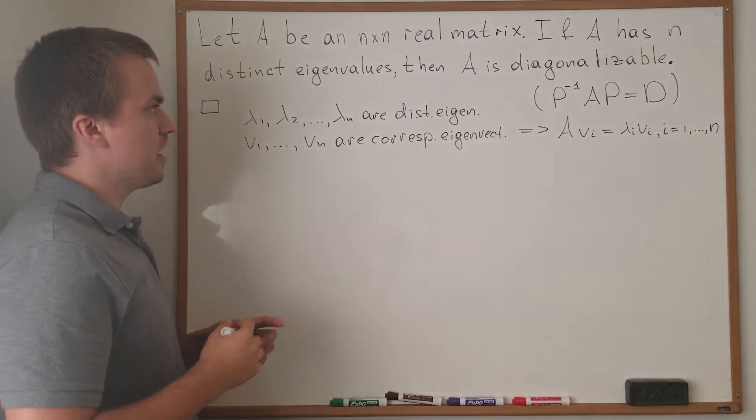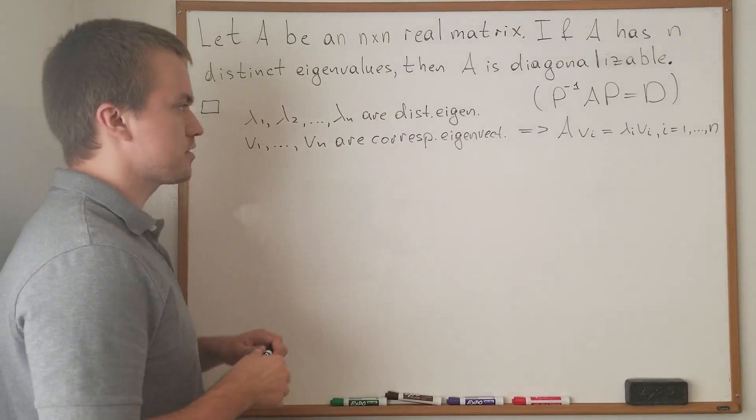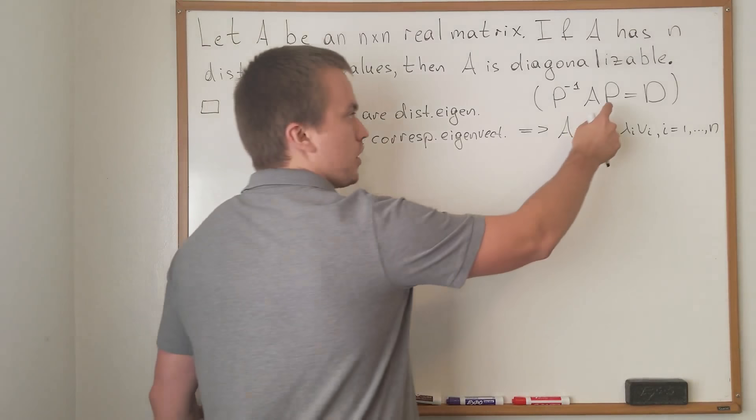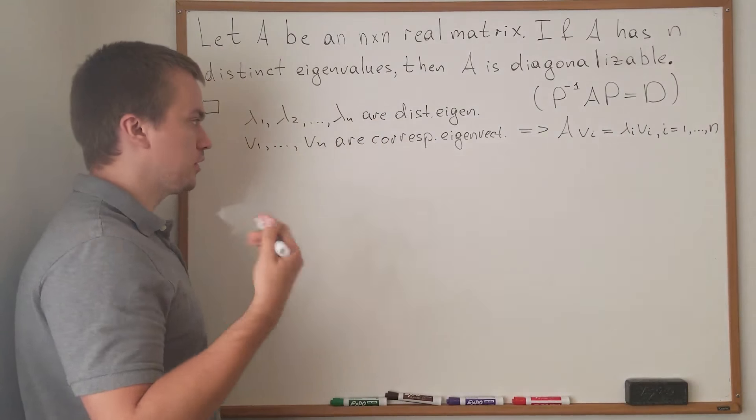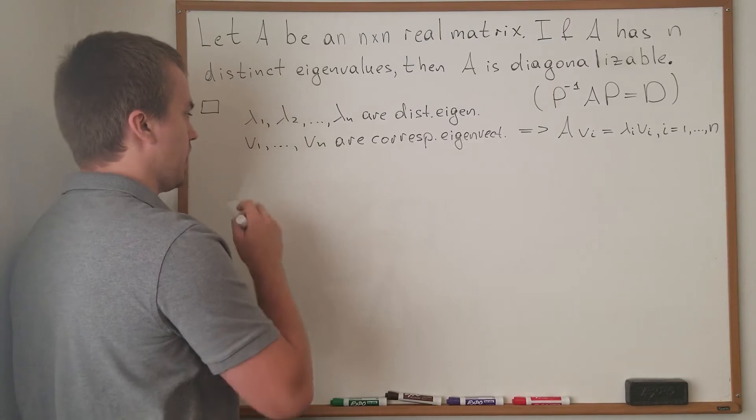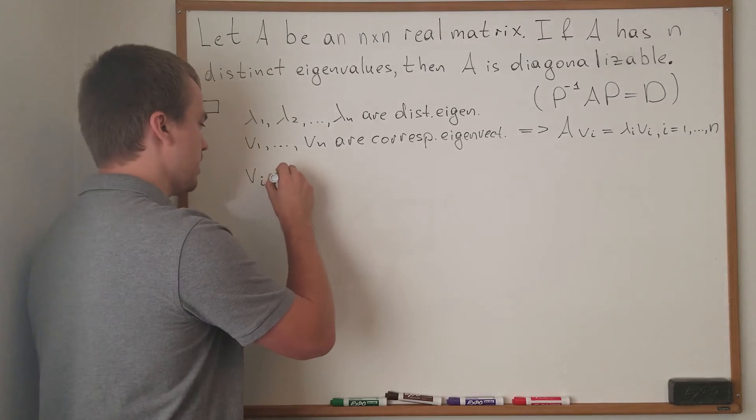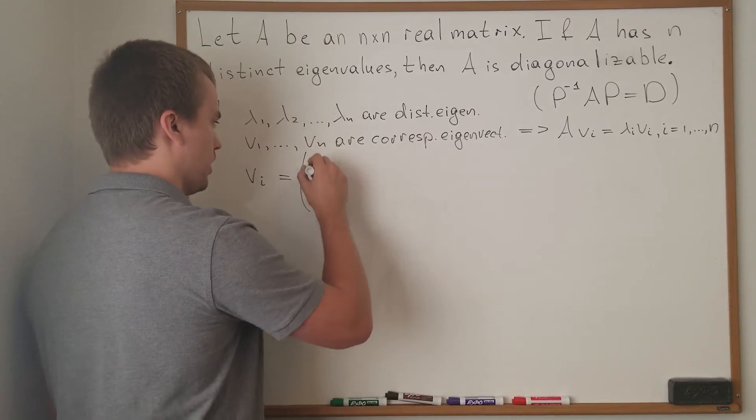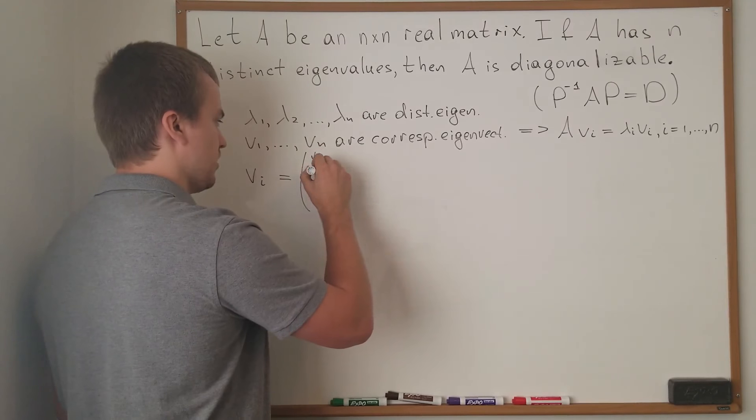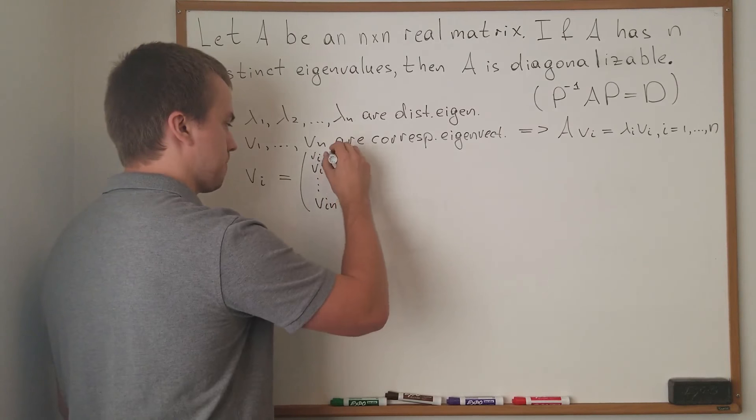So we have n number of eigenvectors, but then we're going to create our matrix P. But before, let me discuss the notation about Vi. If I'm going to write my vector Vi, so my Vi is going to have the form Vi1, Vi2, and up to Vin.